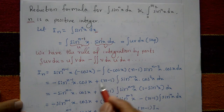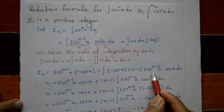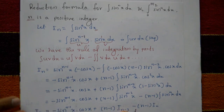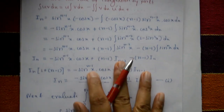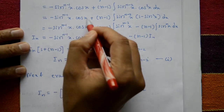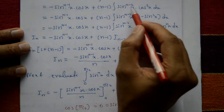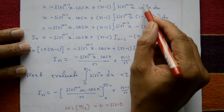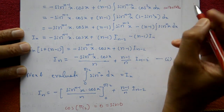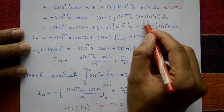This gives −sinⁿ⁻¹x · cosx + (n−1) ∫sinⁿ⁻²x · cos²x dx. Now substitute cos²x = 1 − sin²x, using the identity cos²θ + sin²θ = 1, so cos²x = 1 − sin²x.